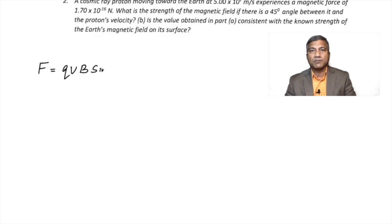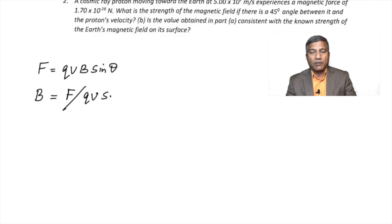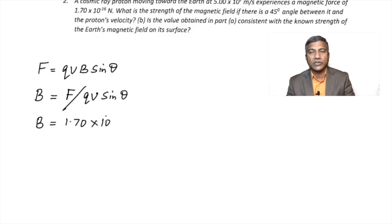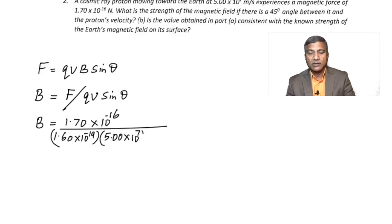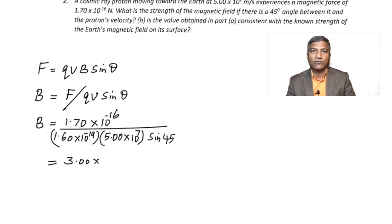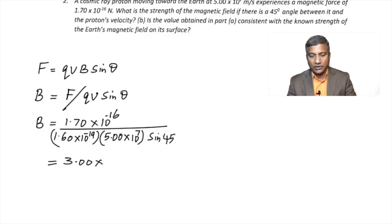The formula is the same: F = QVB sin θ. We rearrange to make B the subject and substitute the values. Since it is a proton, its charge is 1.60 × 10⁻¹⁹ coulombs. Velocity is 5.00 × 10⁷, and sin 45° is used. On calculating, we get 3.00 × 10⁻⁵ Tesla.